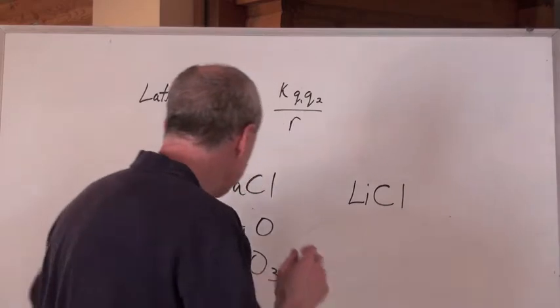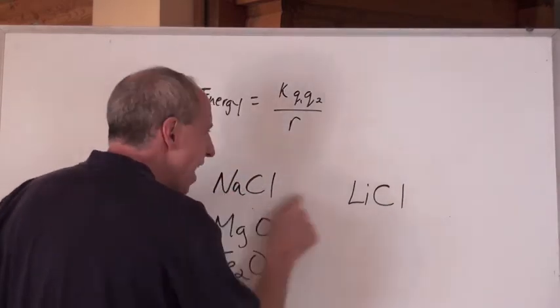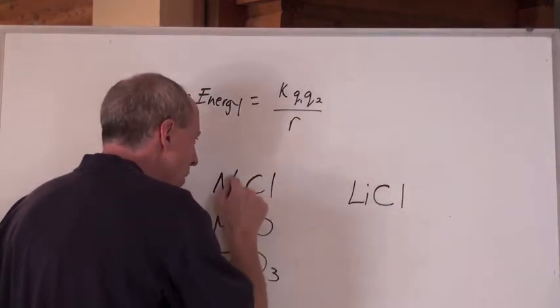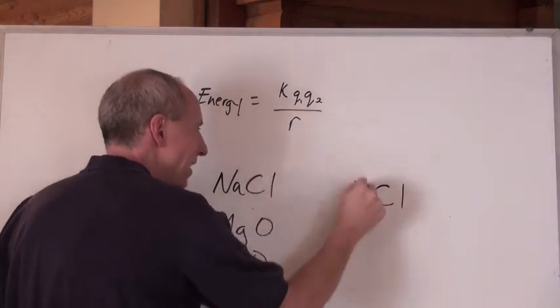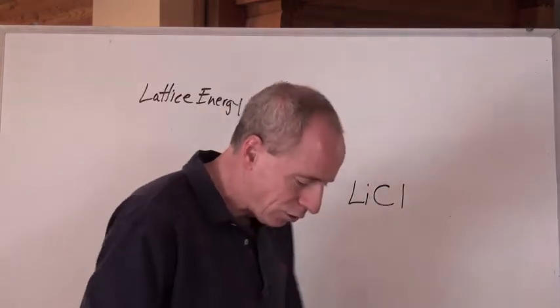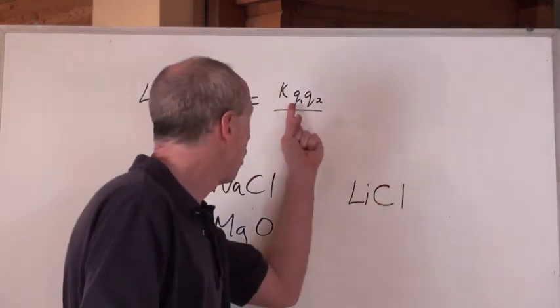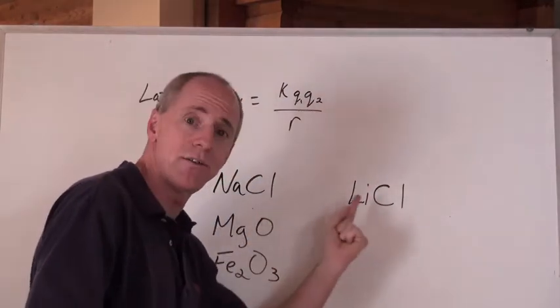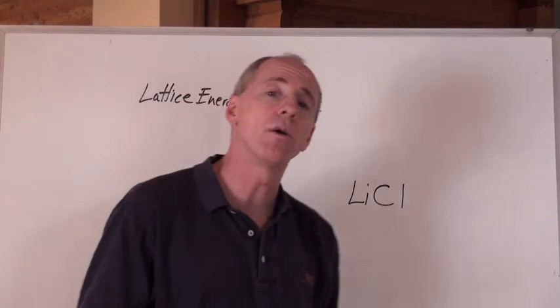Then you go, look, it's the same. It's NaCl, one positive and one negative, and it's the same here, positive one, negative one. So when you can't tell based on the Qs here, which are the charges of the ions, go to the R, which is radius.